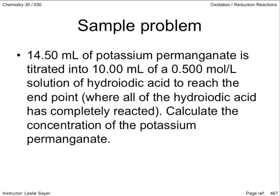14.50 milliliters of potassium permanganate is titrated into 10.00 milliliters of a 0.500 mol/L solution of hydroiodic acid to reach the endpoint where all of the hydroiodic acid is completely reacted. Calculate the concentration of the potassium permanganate.